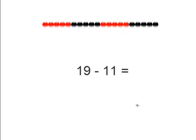Now we see 19 minus 11. Let's take a look at the string of beads. So remember 5 red, 5 black, 5 red, and 5 black equals 20. So to get 19, we need to subtract 1 from 20. So 1 bead. Very good. Now we have 19 beads.